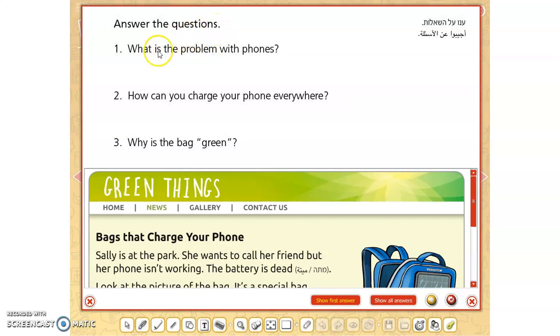Answer the questions. What is the problem with phones? How can you charge your phone everywhere? Why is the bag green? אני רוצה שתענו על השאלות האלה במחברת שלכם. מה בעצם הבעיה בטלפונים? מילת המפתח שלנו יכולה להיות but. How can you charge your phone everywhere? מילת המפתח היא charge. Why is the bag green? אנחנו לא מדברים על צבע, אנחנו מדברים על המהות. התיק הזה לא מהווה שום סכנה לסביבה, הוא בעצם טוב לסביבה.